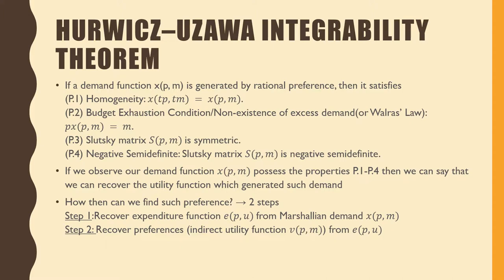So how do we uncover such preferences? Two steps. Step number one, we recover the expenditure function from our Marshallian demand function. And step number two, we recover our utility function or preferences from our expenditure function.